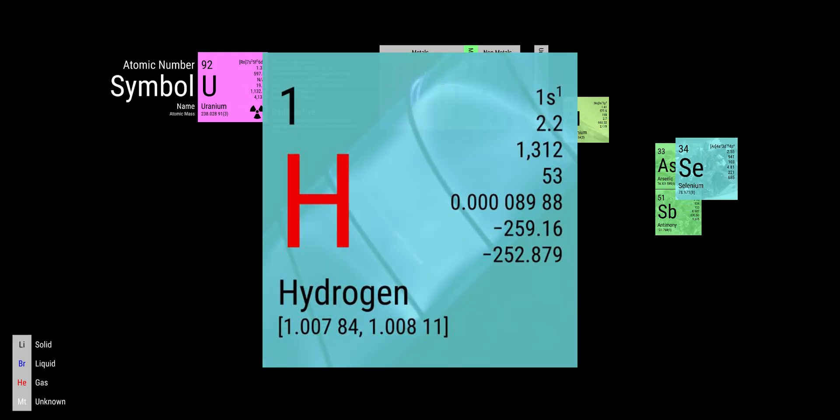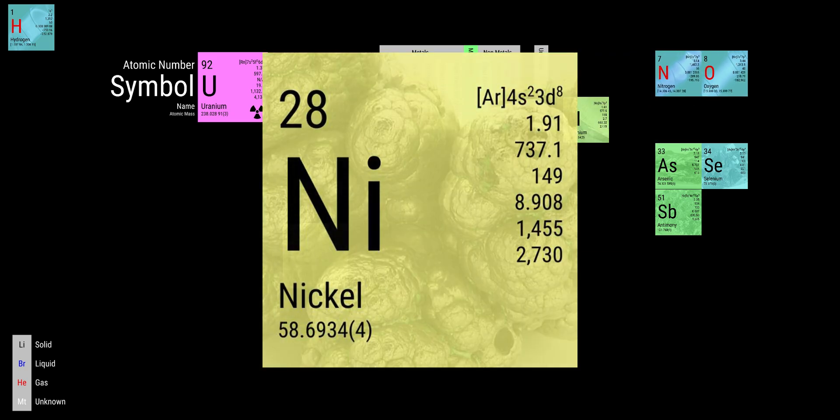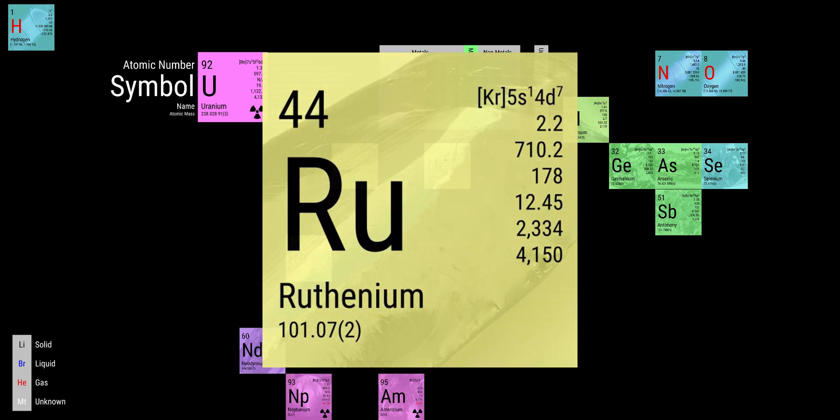There's antimony, arsenic, aluminum, selenium, and hydrogen, and oxygen, and nitrogen, and rhenium, and nickel, neodymium, neptunium, germanium, and iron, americium, ruthenium,